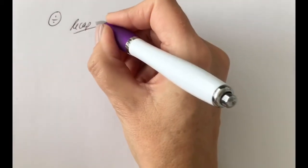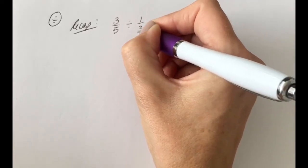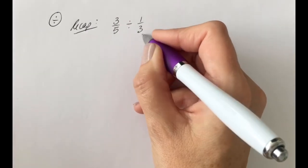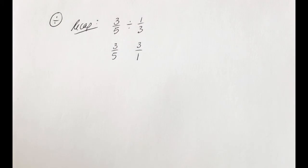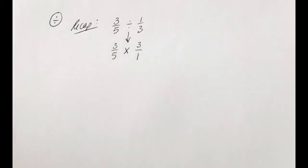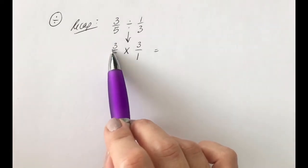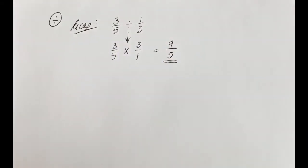Now let's look at division of algebraic fractions. First, a recap on dividing numerical fractions. Say you have 3 fifths divided by a third. When dividing fractions, the process is to flip the second fraction and change to times. So it becomes 3 fifths times 3 over 1. Multiplying along the top and bottom: 3 times 3 is 9 on the top, and 5 times 1 is 5 on the bottom. The answer is nine fifths.